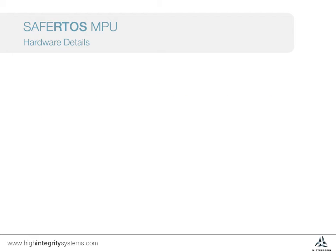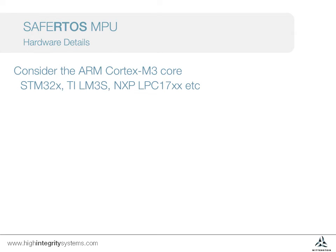The benefits and features of an MPU discussed so far are common to most microcontrollers that offer the feature. To explore in more detail how to use the MPU, we need to go into more implementation defined details. As one of the more common microcontrollers, in this video series we'll consider the ARM Cortex-M3. This is found in devices such as the STM32s, TI LM3S, NXP LPC17 family, and many more. SafeRTOS makes use of the underlying hardware features.